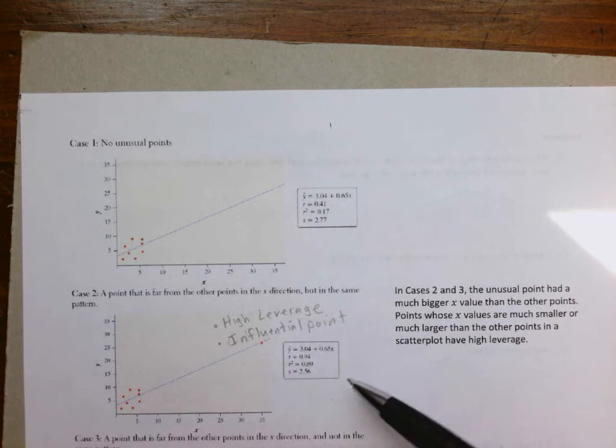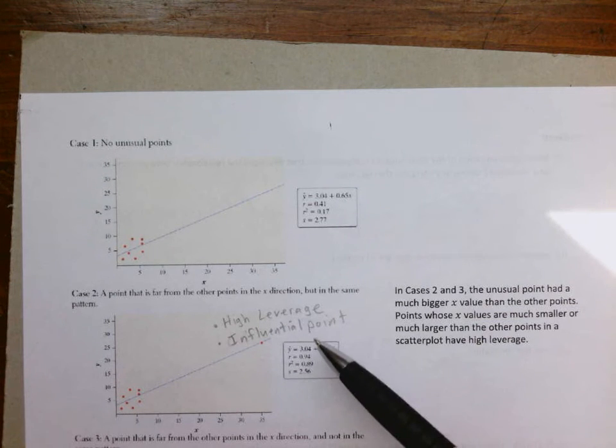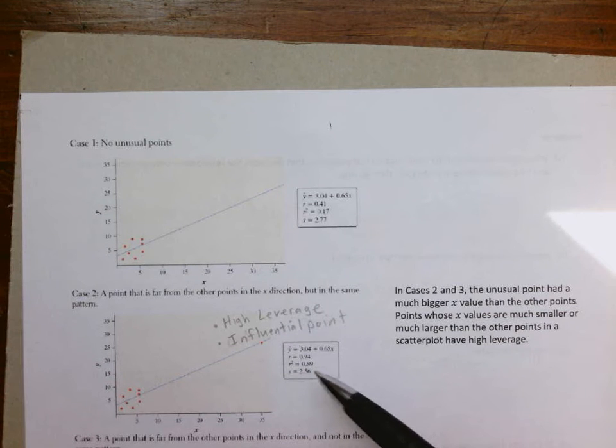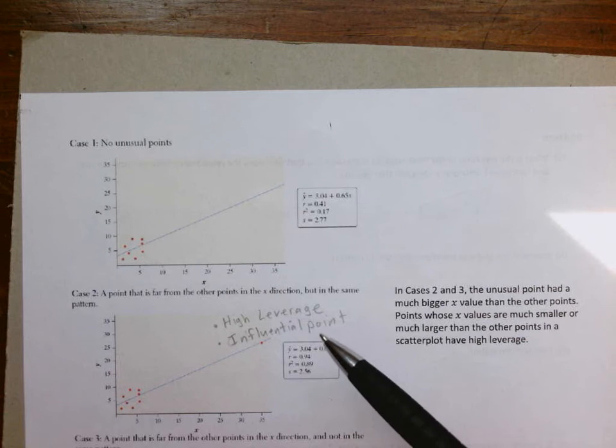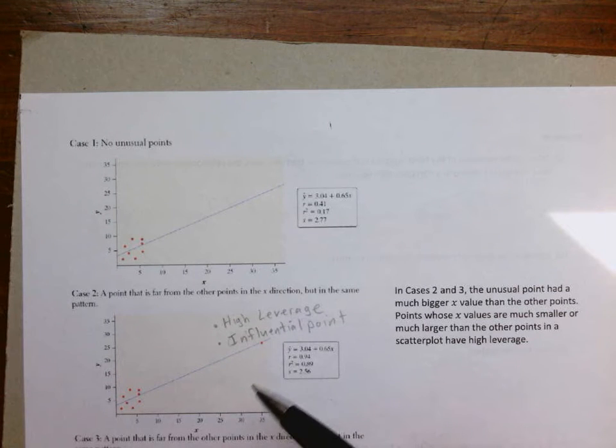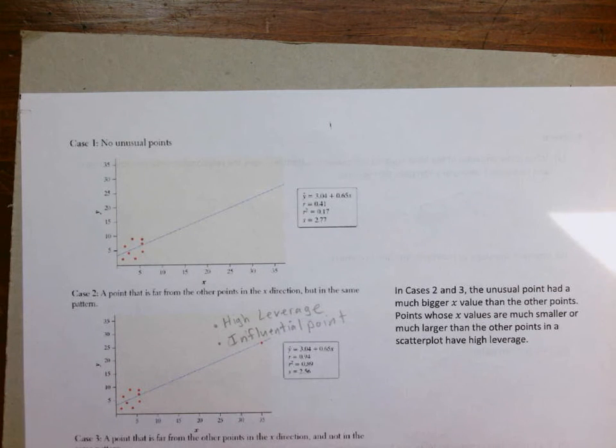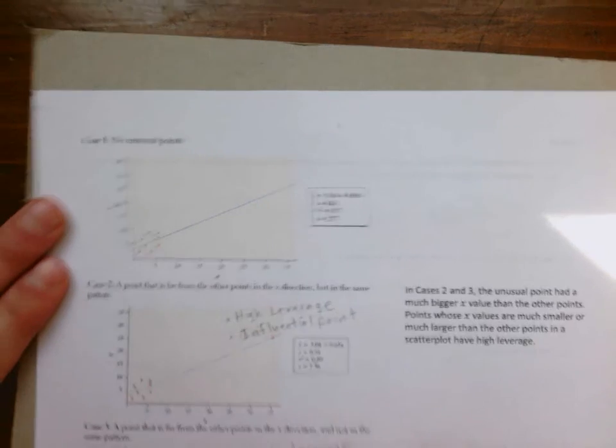Because of that significant change in R and R squared, we refer to that as an influential point. And because of its distance away on the x-axis, we refer to that as a high leverage point. It has a much bigger x than the rest of them, much bigger than what we would expect.